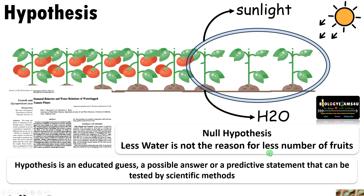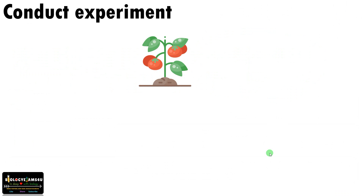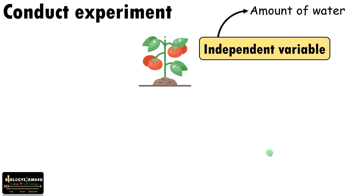We have framed a null hypothesis. The next step is to test this null hypothesis by conducting an experiment. To design an experiment, we need to decide which variables are to be selected. A variable is any factor that is changing in an experiment that can be measured or quantified. One variable is the independent variable — the variable that the researcher changes in an experiment.